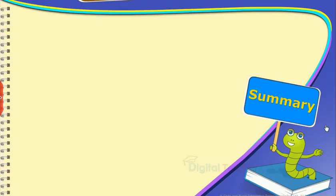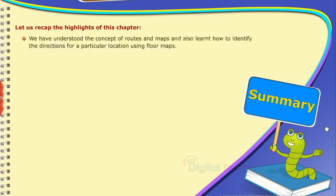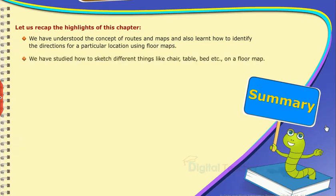Summary: Let us recap the highlights of this chapter. We have understood the concept of routes and maps and also learned how to identify the directions for a particular location using floor maps. We have studied how to sketch different things like chair, table, bed, etc. on a floor map.